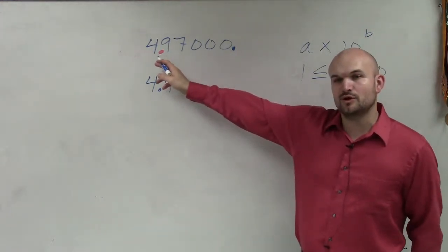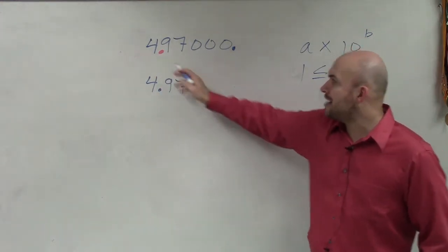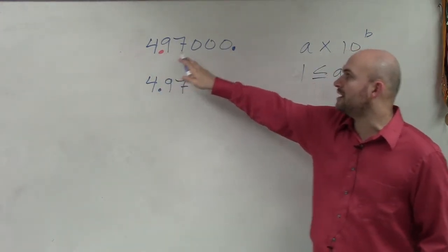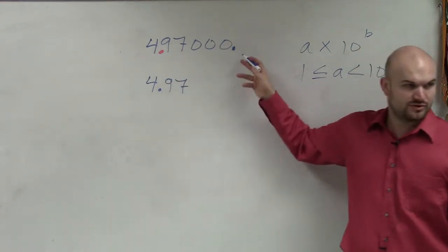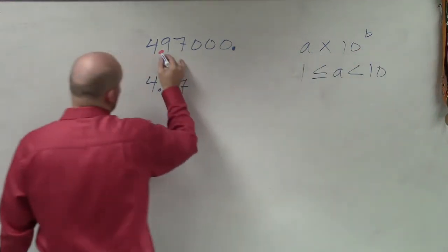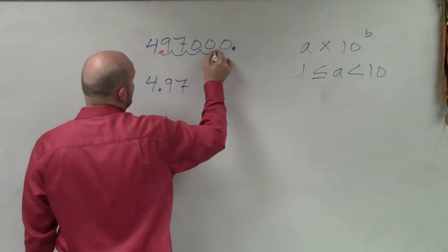So if I'm going to rewrite the decimal point over there, how many spaces do I need to move it so it goes back to its original? And then you basically just count: 1, 2, 3, 4, 5.